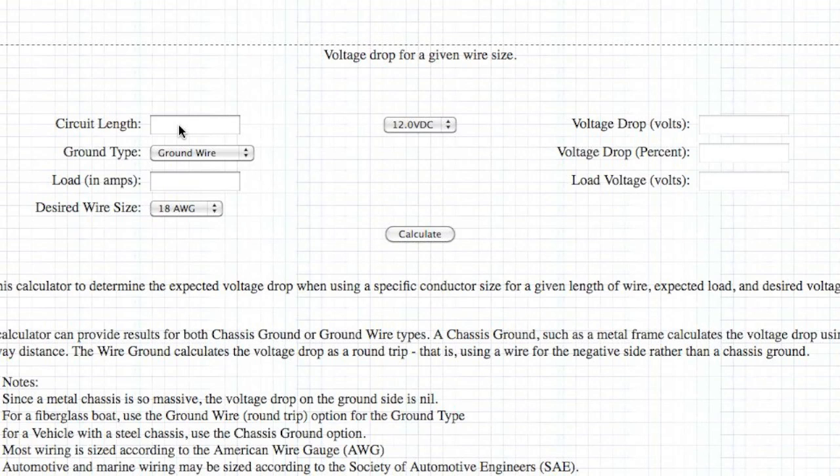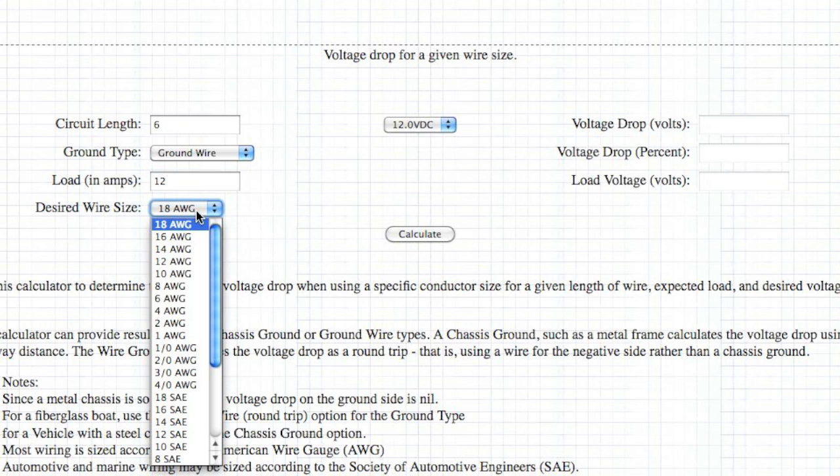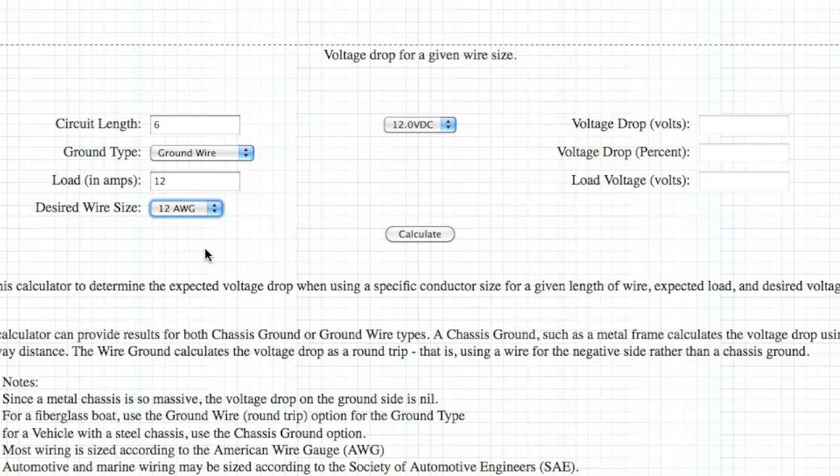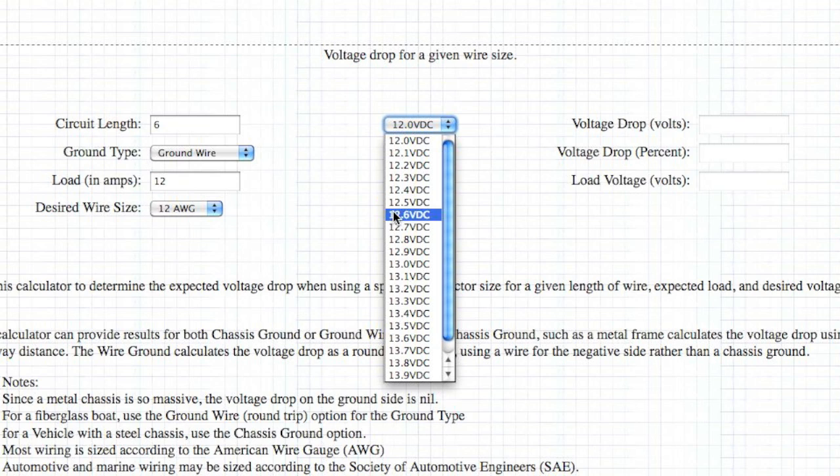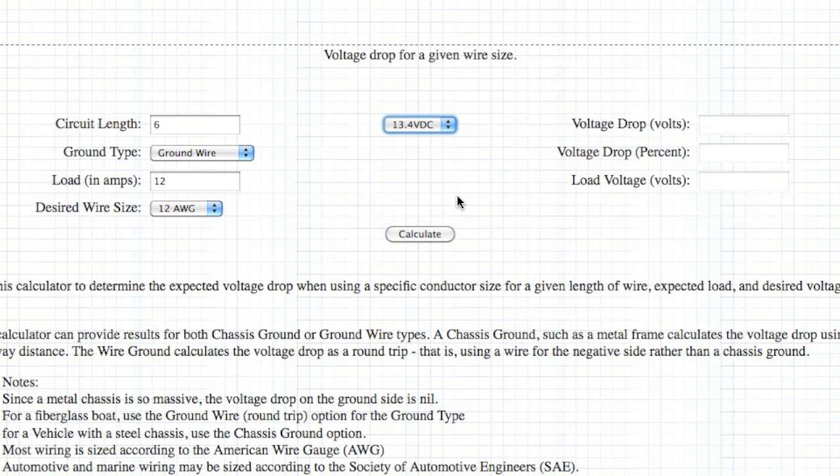So we're going to do run D first, because the 7-pin pigtail is wired with 12 AWG for the brake line. Again, we're going to put in our parameters of 6 foot for the circuit length. That's the length of the pigtail for the 7-pin connector. And then 12 amps, because we have four brakes at 3 amps each. And the pigtail is already wired in 12 gauge. And our system voltage from the truck is 13.4 volts. When we calculate that, we show a 0.238 volt drop. So that's what we're going to use for run D.